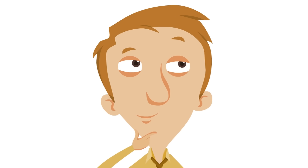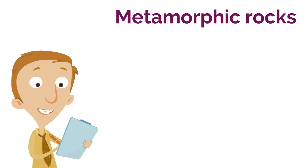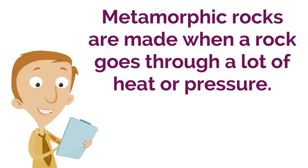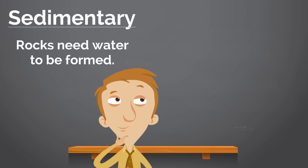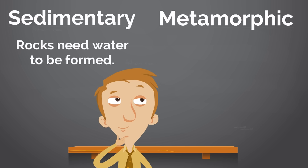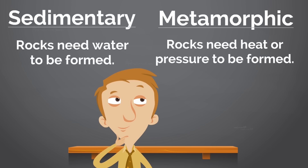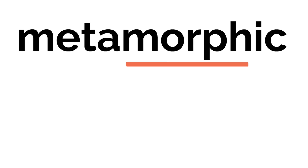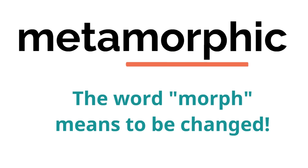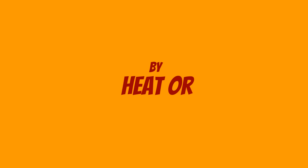Okay, we have two categories left. Let's learn about metamorphic rocks next. Metamorphic rocks are made when a rock goes through a lot of heat or pressure. Remember, sedimentary rocks need water to be formed — metamorphic rocks are different. They need heat or pressure. Here is a simple way to remember that: the word metamorphic has another word inside of it — the word morph. Morph means to be changed. So when you think of rocks that are changed by heat or pressure, think metamorphic.